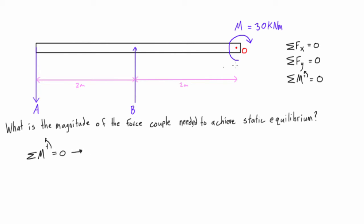What this is basically saying is that we have this negative 30 kilonewton meter moment, plus the moment that's being caused by A, B, so let's just call it moment A, B, I suppose.